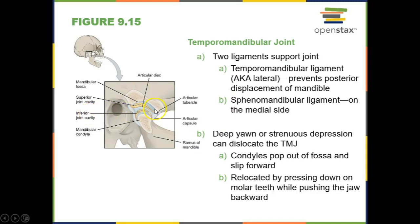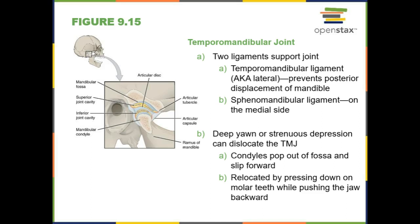The first joint we'll talk about is the temporomandibular joint. The TMJ is a joint between the mandibular fossa of the temporal bone and the mandibular condyle on the mandible. Between these two bones, we do have articular cartilage that helps to decrease compression or pain, so it kind of acts as a shock absorber, very much like the meniscus in our knees.